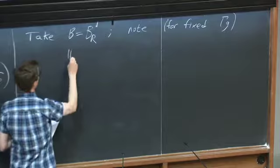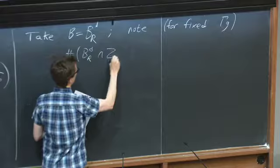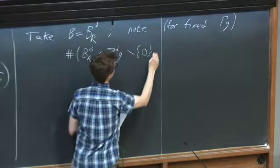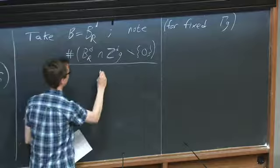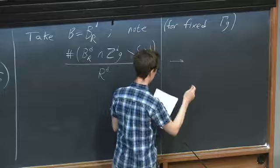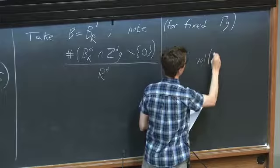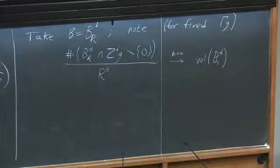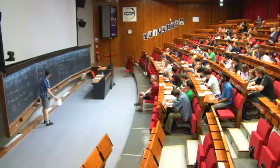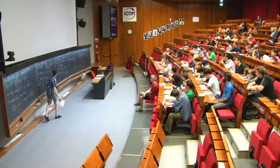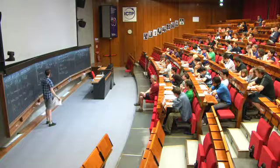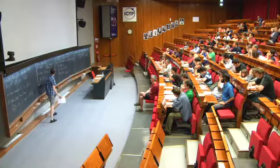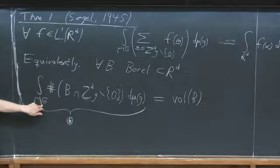For any fixed γg, the integrand—the number of points in the lattice inside the ball of radius R excluding the origin—divided by R^d tends to the volume of the unit ball as R goes to infinity. So if we take this identity with B being the ball of large radius R, divide by R^d, and apply Lebesgue's dominated convergence theorem, we would conclude C equals 1. The issue is we lack uniform convergence over the whole space.